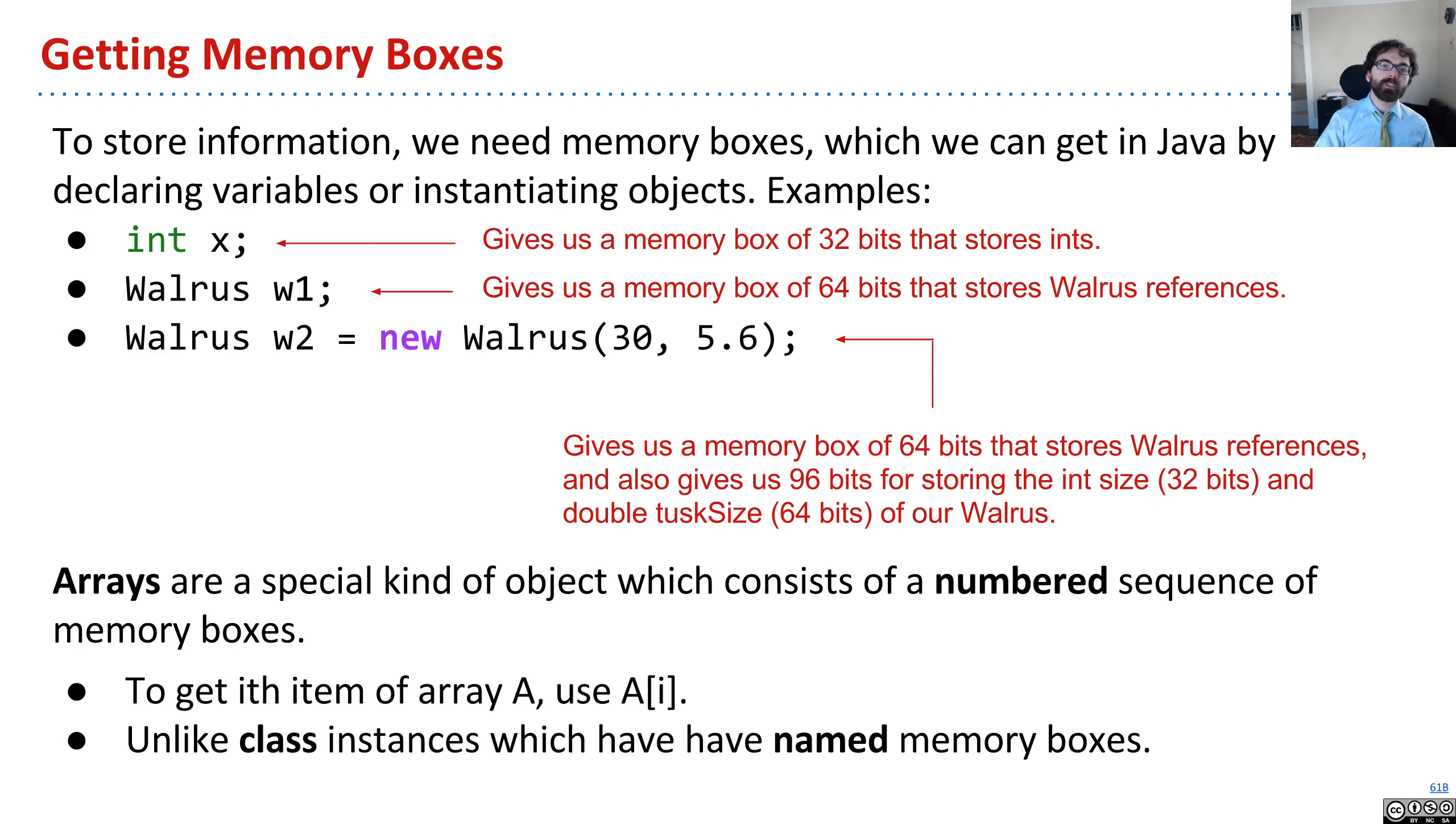So let's start by thinking back about how memory works. In general, if we want to have a list of a million items, we need a million memory boxes. We've talked about different ways that you can get memory boxes in Java.